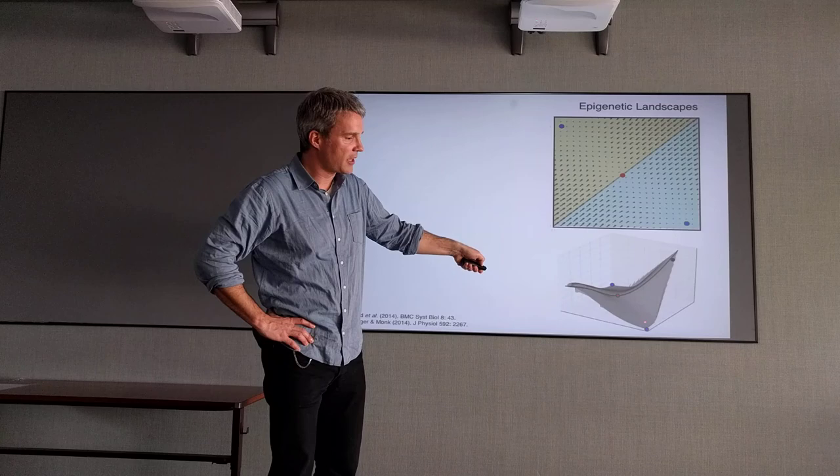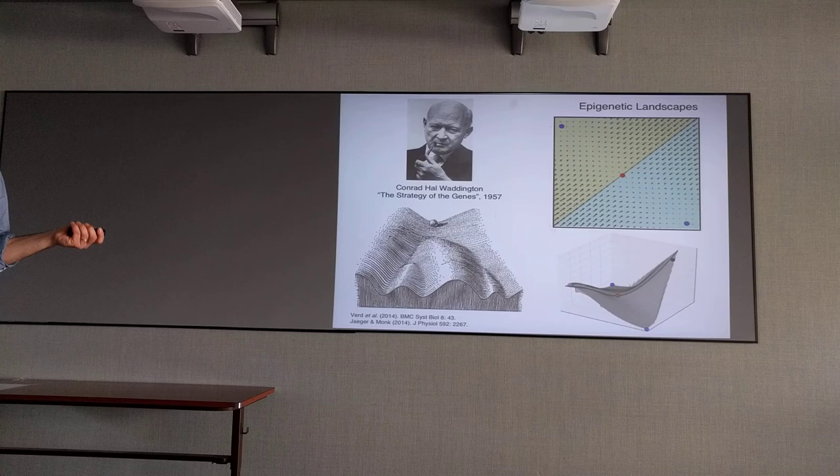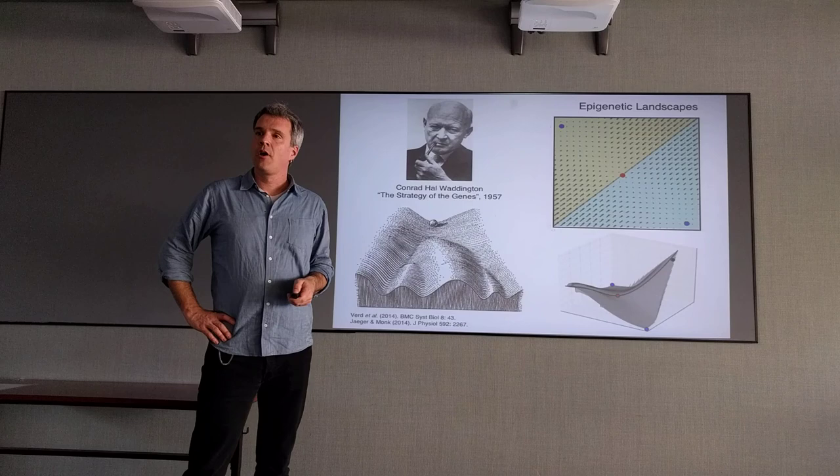You can now clearly see why the unstable steady state here is called a saddle. It's like a mountain pass or a horse saddle. These valleys are called unstable manifolds. Don't worry about that too much. And here you have a little ball rolling down a landscape that represents the state of the system. What this is, is an explicit representation of the metaphor of Waddington.